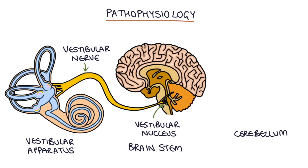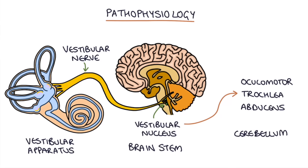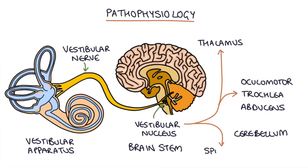The vestibular nucleus then sends signals to the oculomotor, trochlear and abducens nuclei, which are responsible for controlling eye movements, and also to the thalamus, the spinal cord and the cerebellum. The cerebellum is responsible for coordinating movement throughout the body, so the vestibular signals help the central nervous system coordinate eye movements and movements throughout the body.